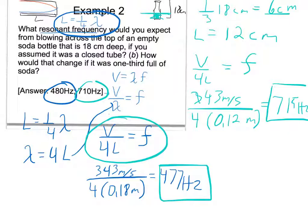You can see how using harmonics we can figure out what frequency something's going to make. This is actually how people who build musical instruments figure out how long to make strings, how long to make the pipes on an organ, how big to make a harmonica. Remember the rules: closed at one end means quarter wavelengths; open at both ends means half wavelengths. If you think about the drawing, if it's open at both ends you have anti-nodes at both ends; open only at one end gives you an anti-node and a node.